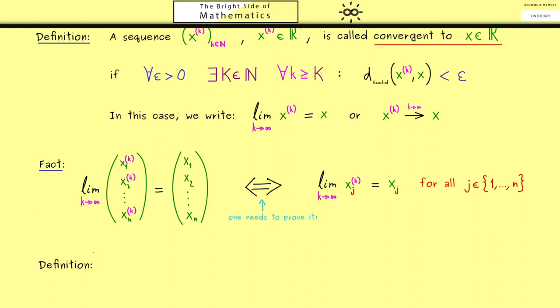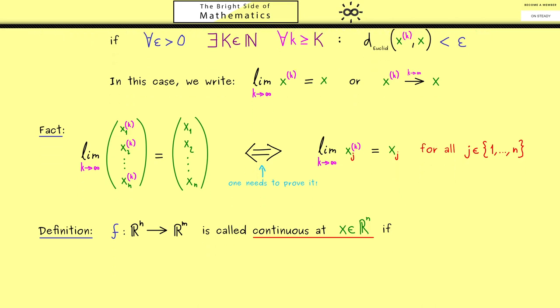However, before we talk about examples, let's close the topic here by defining the concept of continuity. So let's consider again a function f from Rⁿ to Rᵐ and also a point x in the domain Rⁿ. This is the fixed vector x where we talk about continuity at this point. Again, continuity is a pointwise property. Now for the definition, I would say let's go with the sequence definition. The idea is the same as before: we consider all possible sequences x⁽ᵏ⁾, and if they converge to the point x, then the conclusion should be that the images also converge. More precisely, we now have a sequence on the right-hand side, so in Rᵐ, and this sequence should converge to the vector f(x).